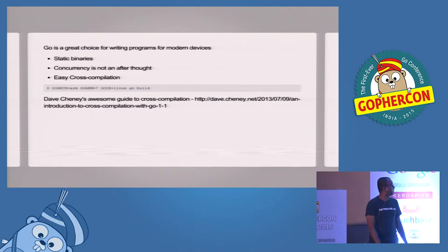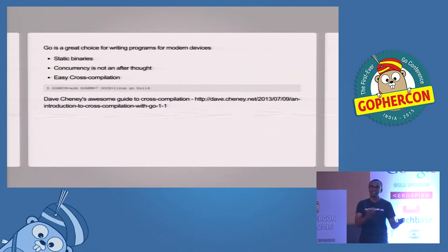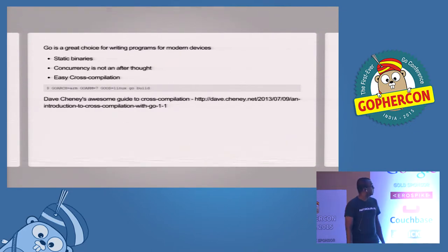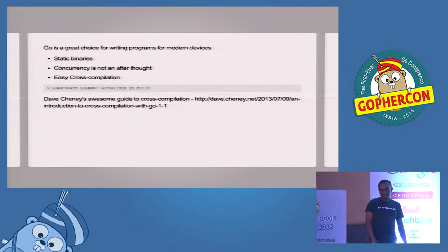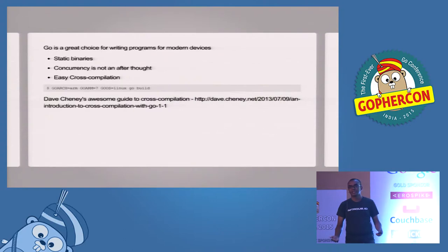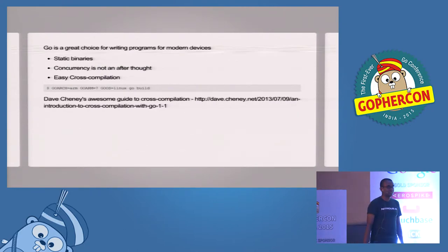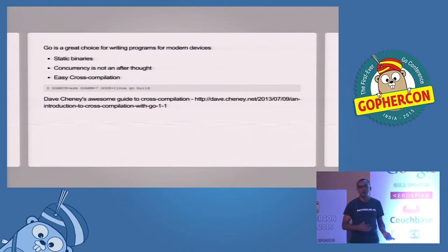Also, these devices now have multiple cores, so concurrency is no longer an afterthought — it has to be part of the design process itself. When you have four cores already, you should be making use of those. And easy cross-compilation — huge props to Dave Cheney for coming up with these tools, checking out different architectures and compiling Go source for each of them. He has a great blog post on how to cross-compile Go applications. Do check out that link to get updated on how to cross-compile your application.